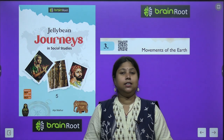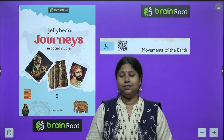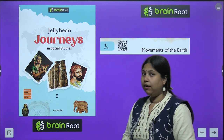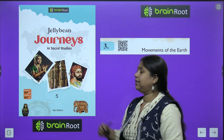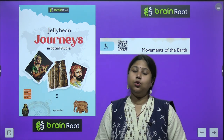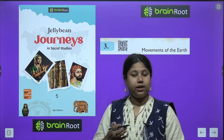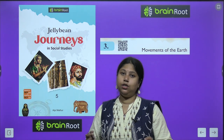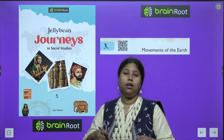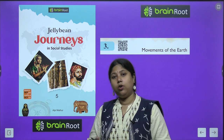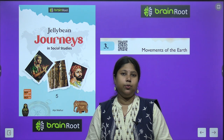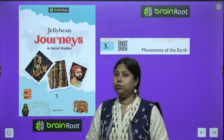Hello my dear kids, welcome back to your SST class. I am your teacher and mentor Ananya. We are doing the Jellybean Journey series by Brainroot Publications for Class 5. So far, children, we have done chapters 1 and 2 — the shape of the earth, studying through the globe and maps, important lines like longitudes and latitudes, which are imaginary lines through which we can see different locations on earth.